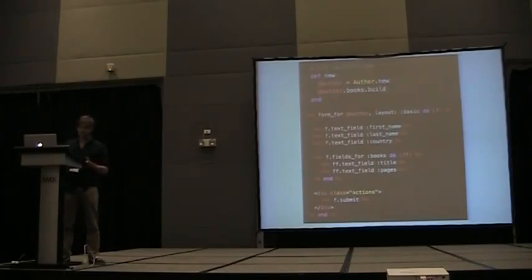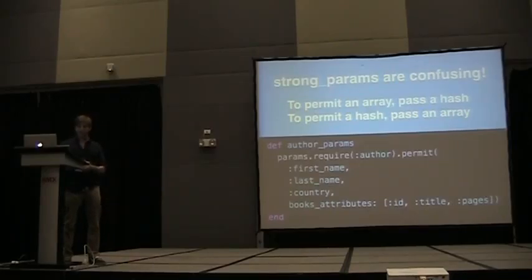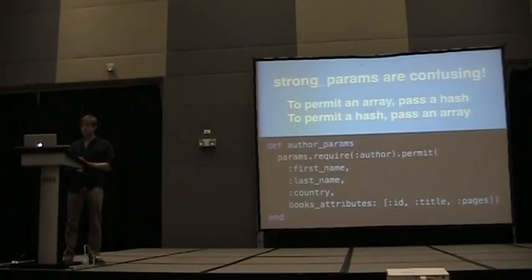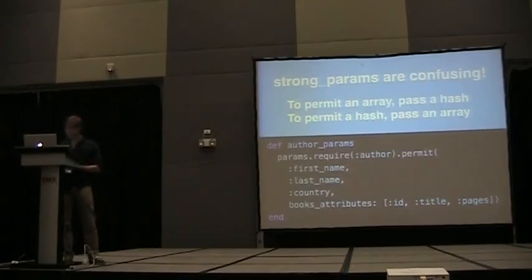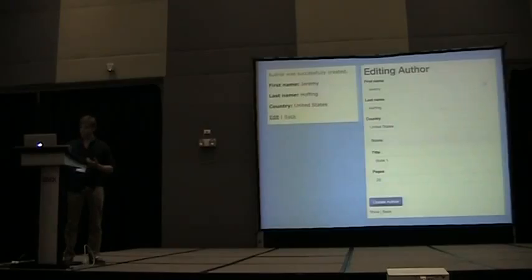But it doesn't stop there. You also have to deal with strong params, and it's pretty confusing. If I want to be able to create books along with an author, I have to first say books_attributes and then pass an array of the book attributes. It's confusing how it's reversed, because I have to permit an array to pass a hash, and I have to permit a hash to pass an array. And let's go ahead and finally submit this form — and that works. I can go edit the author and see it saved the book.